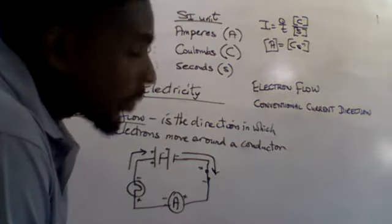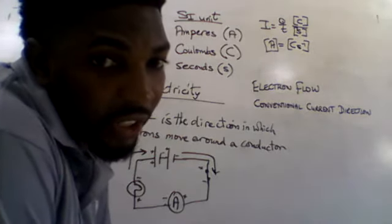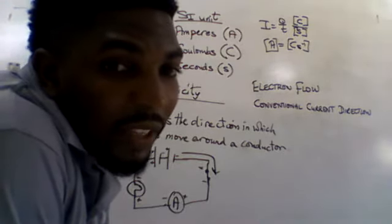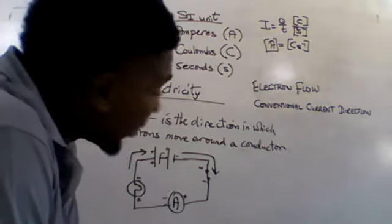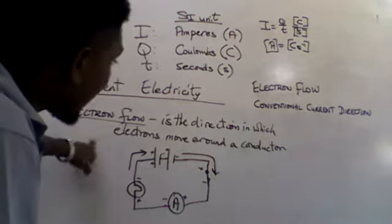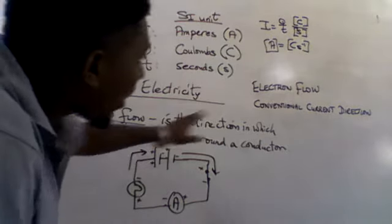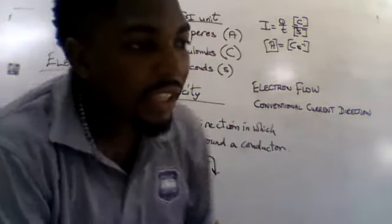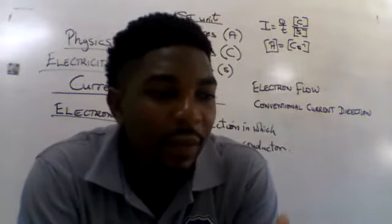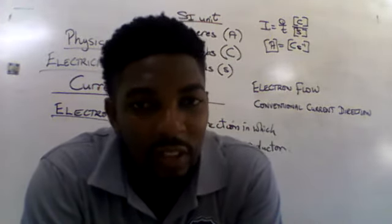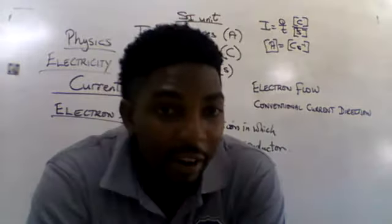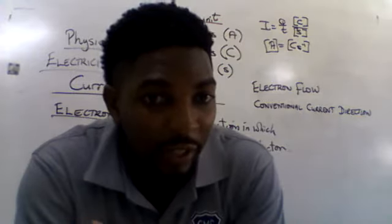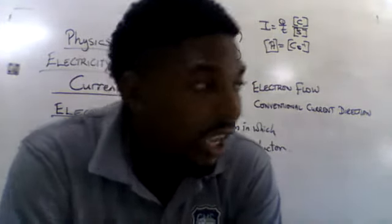The next concept is conventional current direction. Conventional current direction looks at the movement of positive charges. Unlike electron flow — which tracks the movement of electrons (negative charges) — conventional current direction perceives positive charges as the ones moving around the circuit.